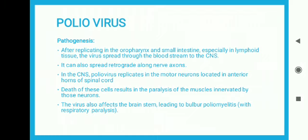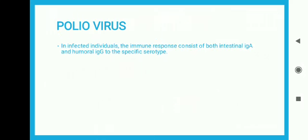Death of these motor neurons results in paralysis of the muscles innervated by those neurons. The virus also affects the brain stem, leading to bulbar poliomyelitis with respiratory paralysis. The immune response consists of both intestinal immunoglobulin A and humoral immunoglobulin G to the specific serotype.